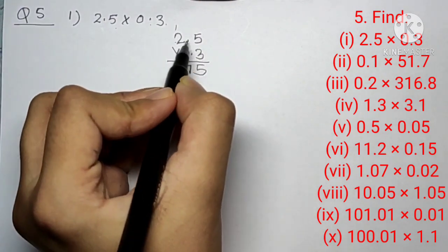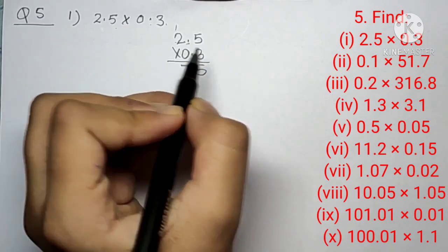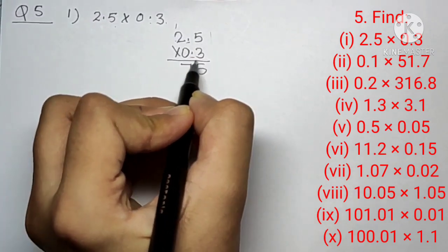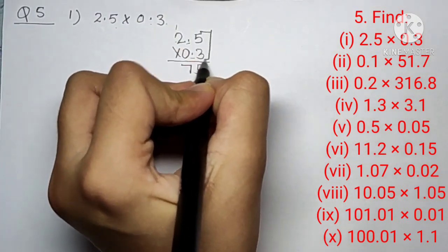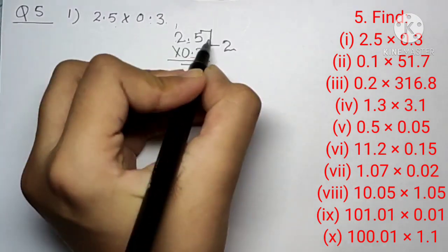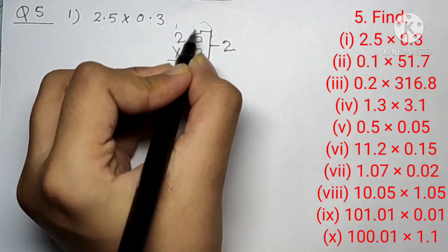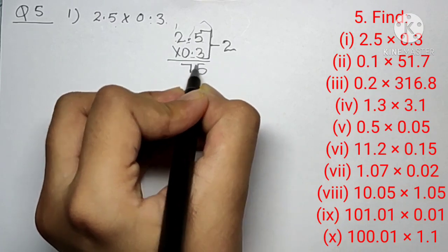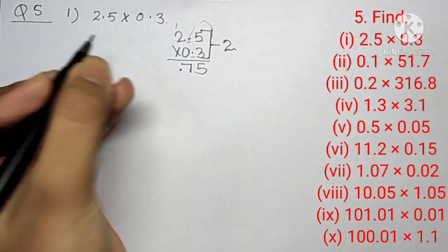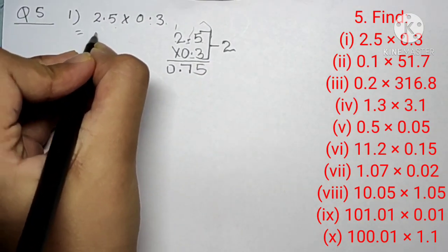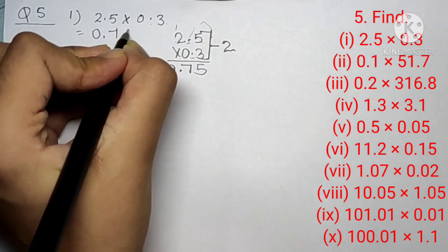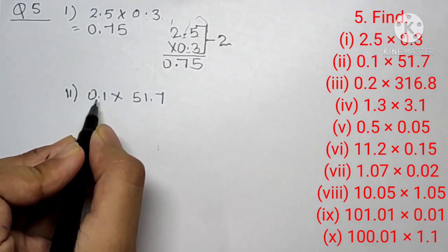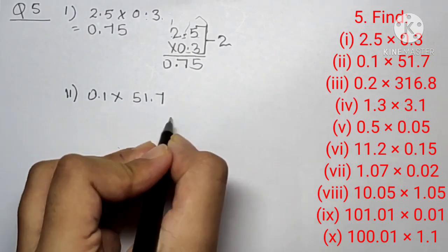Now the problem is where the decimal point would be. We can see there are two decimal points and both are one digit from the last. If we count these two decimal points: one plus one equals two. So the decimal point will be two digits from the last, giving us 0.75.